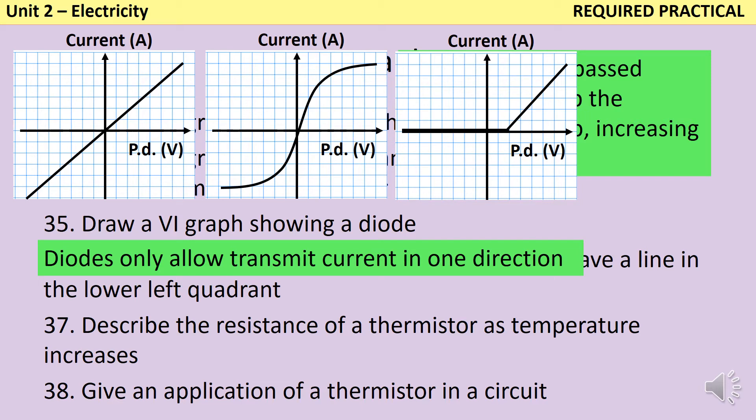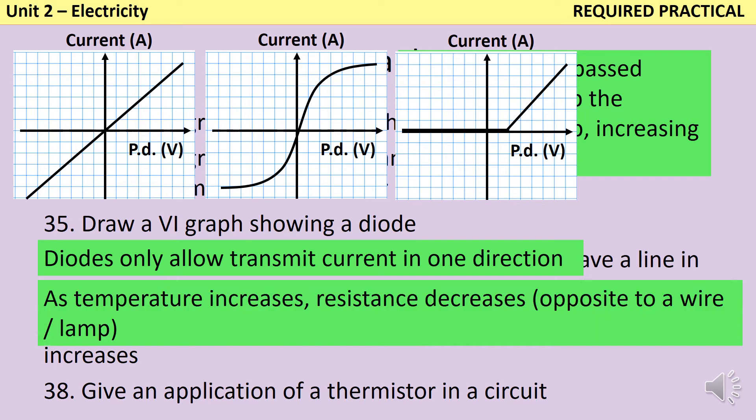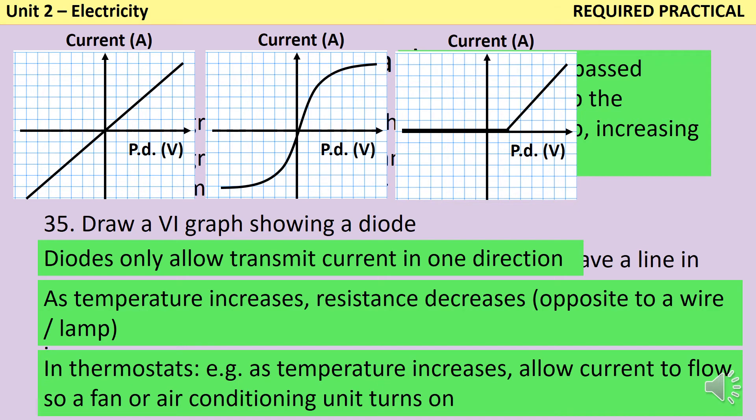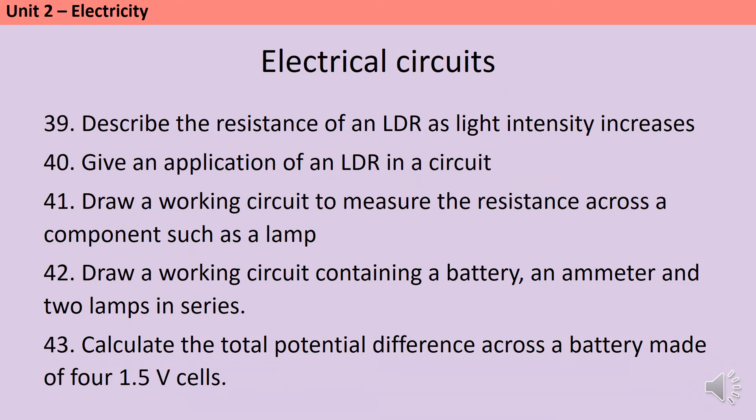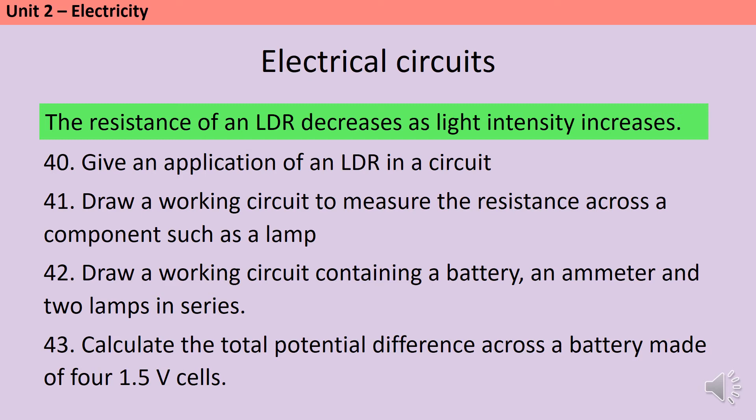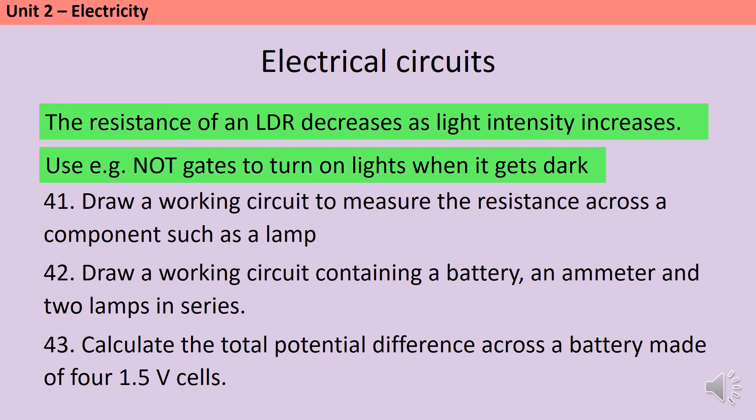As you heat up a thermistor, it acts in the opposite way to a wire. So whereas a wire resists more as it gets hotter, a thermistor resists less. You could use this in something like a thermostat. So as the temperature increases, the resistance decreases, allowing current to flow, and this could allow a fan or air conditioning unit to turn on. The resistance of a light dependent resistor decreases as lights turn on. In other words, circuits with an LDR in them will have current flowing when it's light outside. This means you could use it for something like turning on an alarm clock or a radio that comes on in the morning, but you can also use them together with NOT gates in order to turn on lights as it gets dark outside.